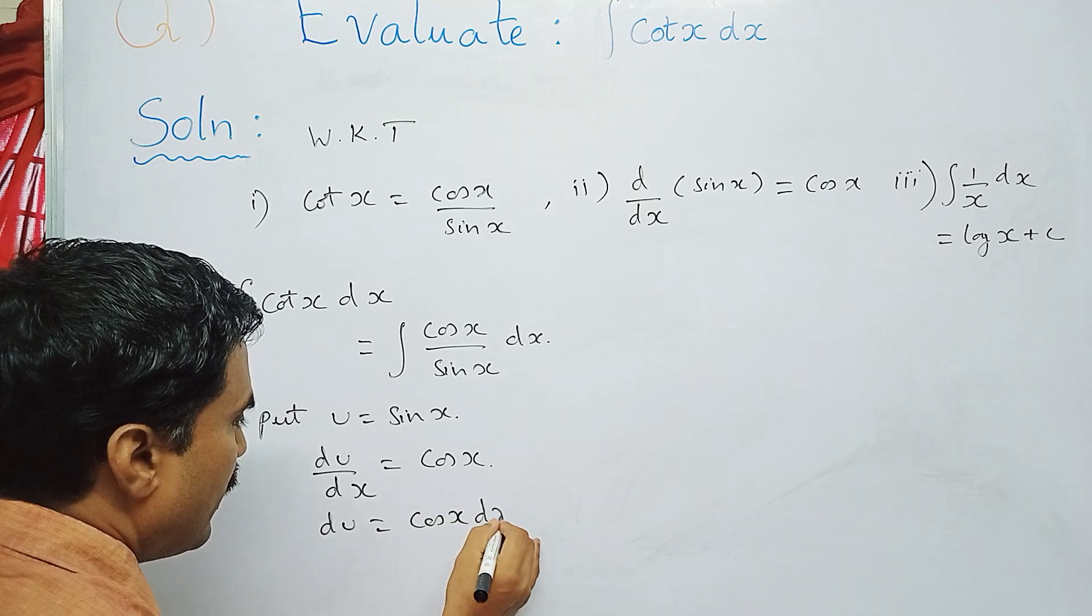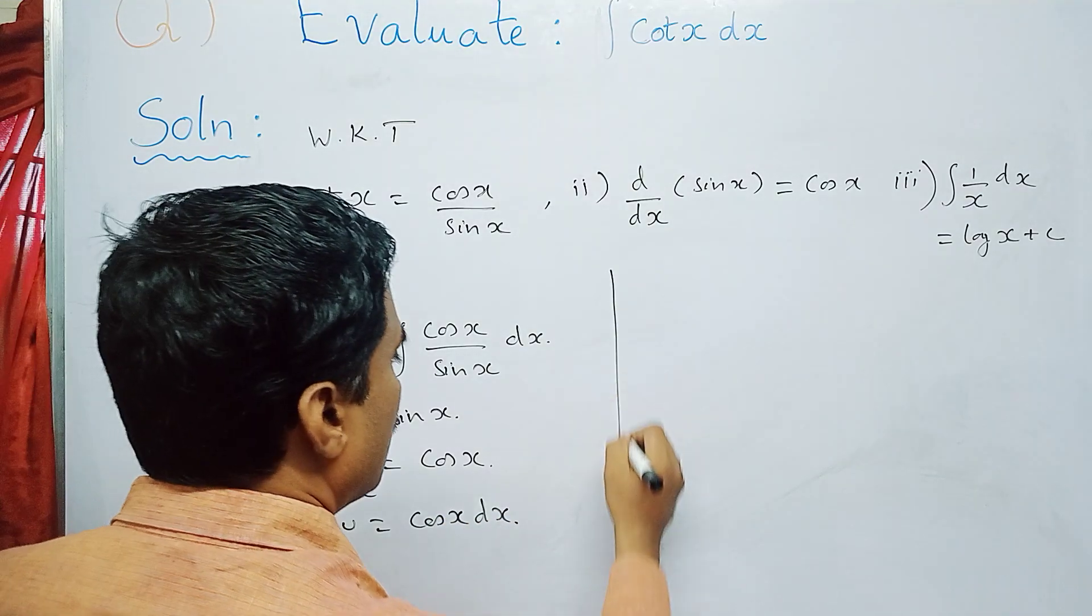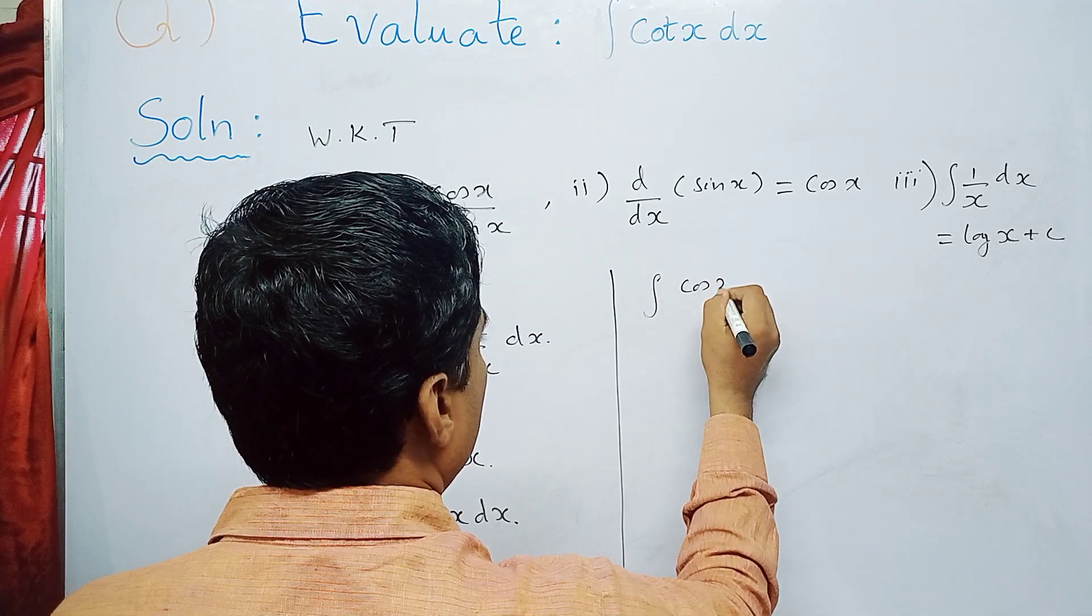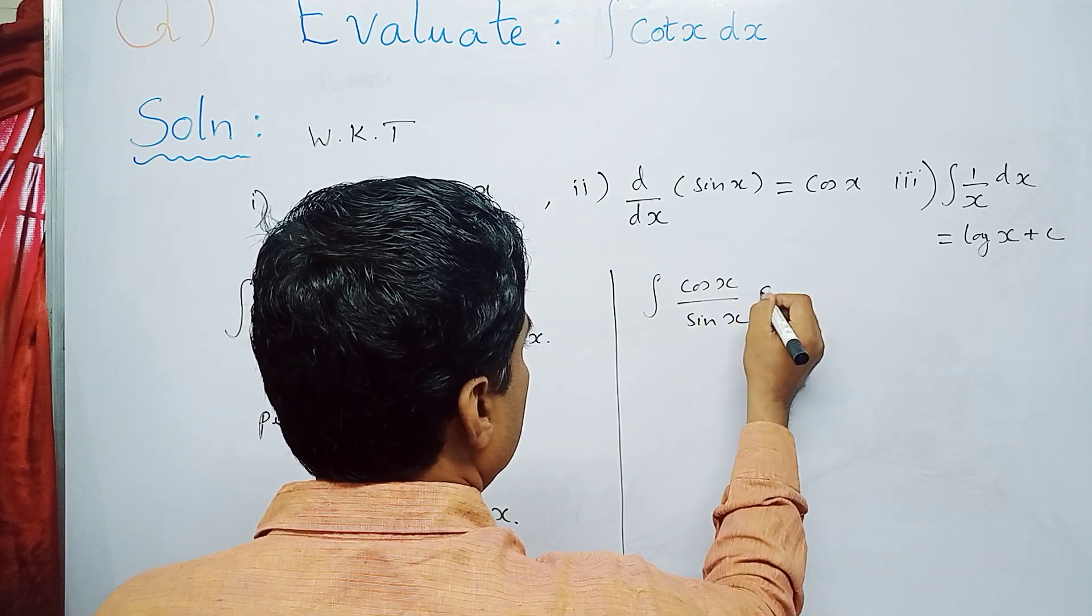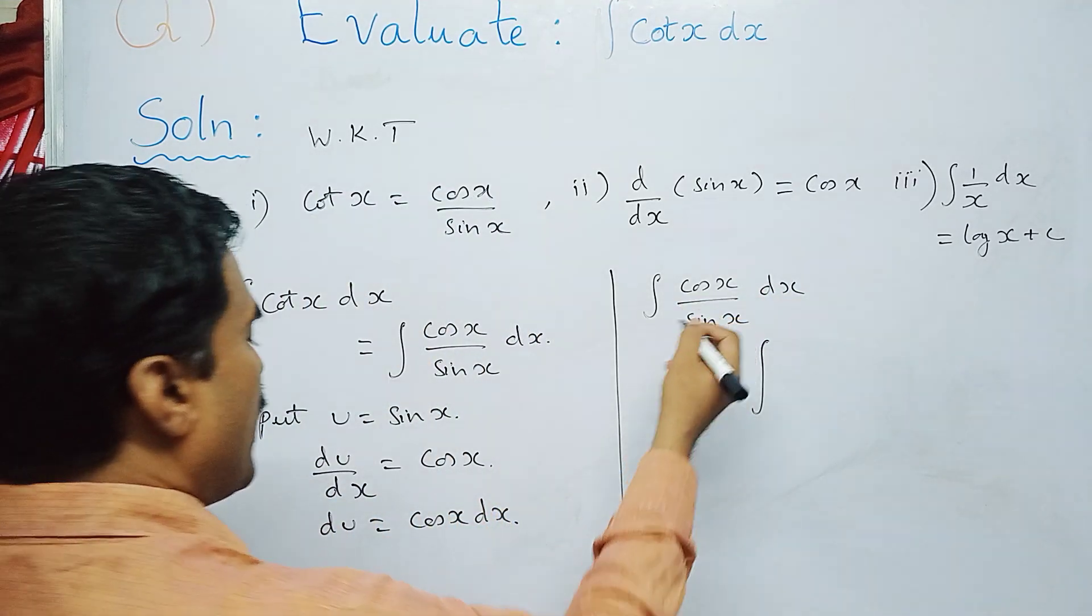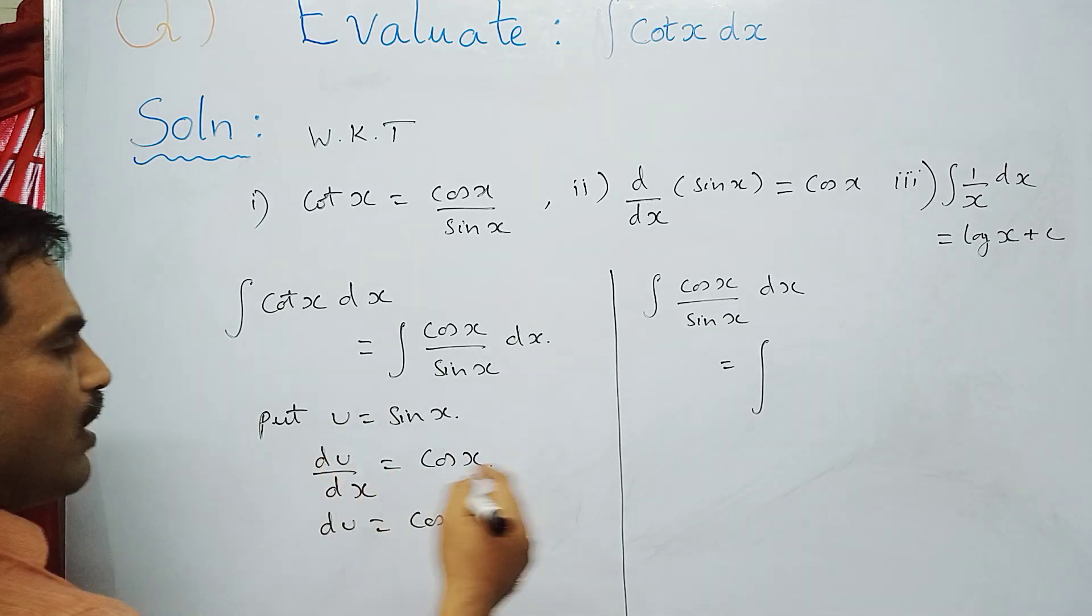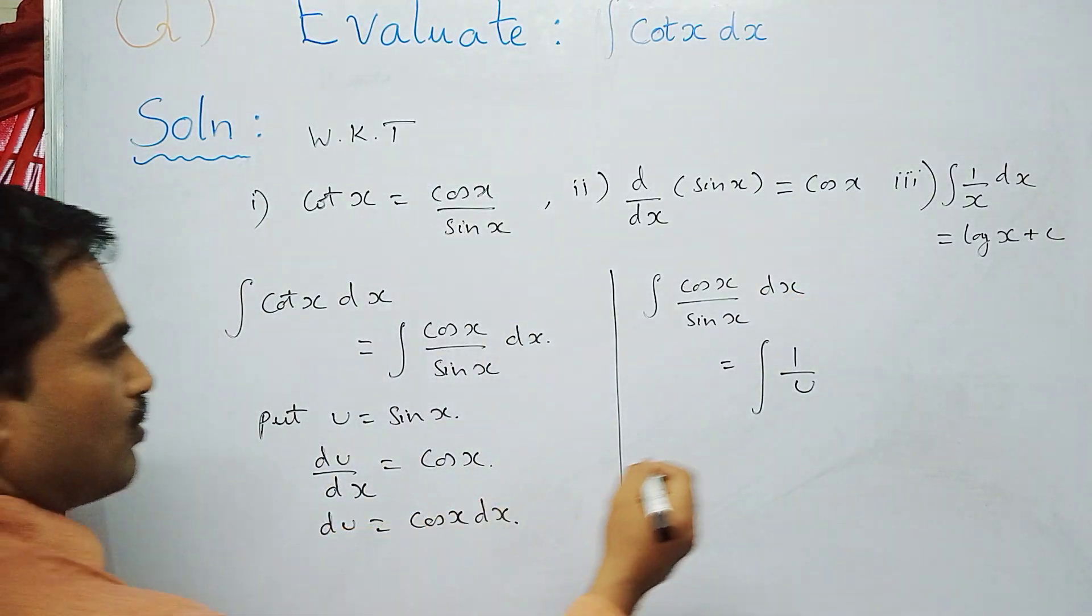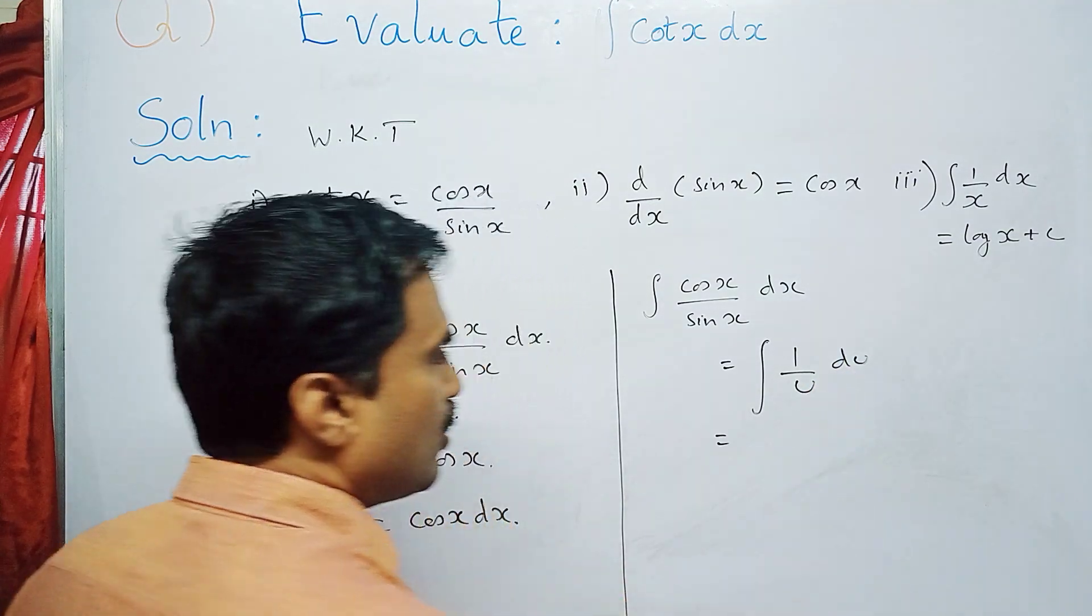So the given integral becomes: integral (cos x / sin x) dx = integral 1/sin x. What is sin x here? You are taking as u, so 1/u. Now cos x dx is du, so integral 1/u du.